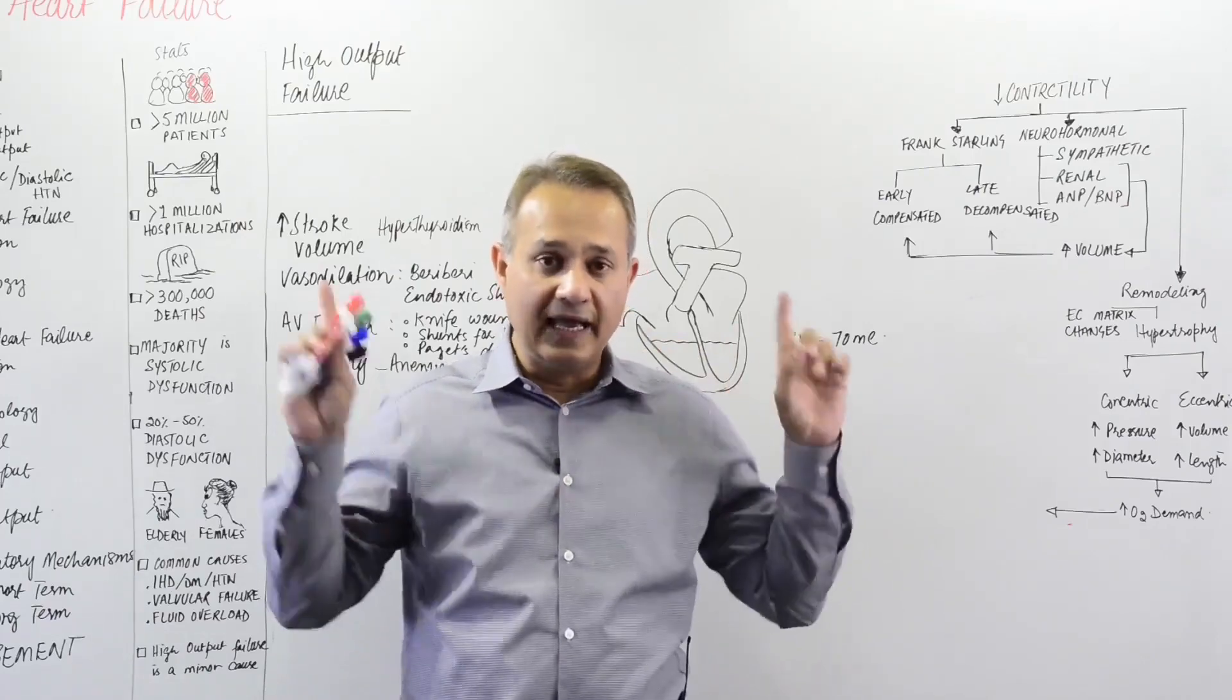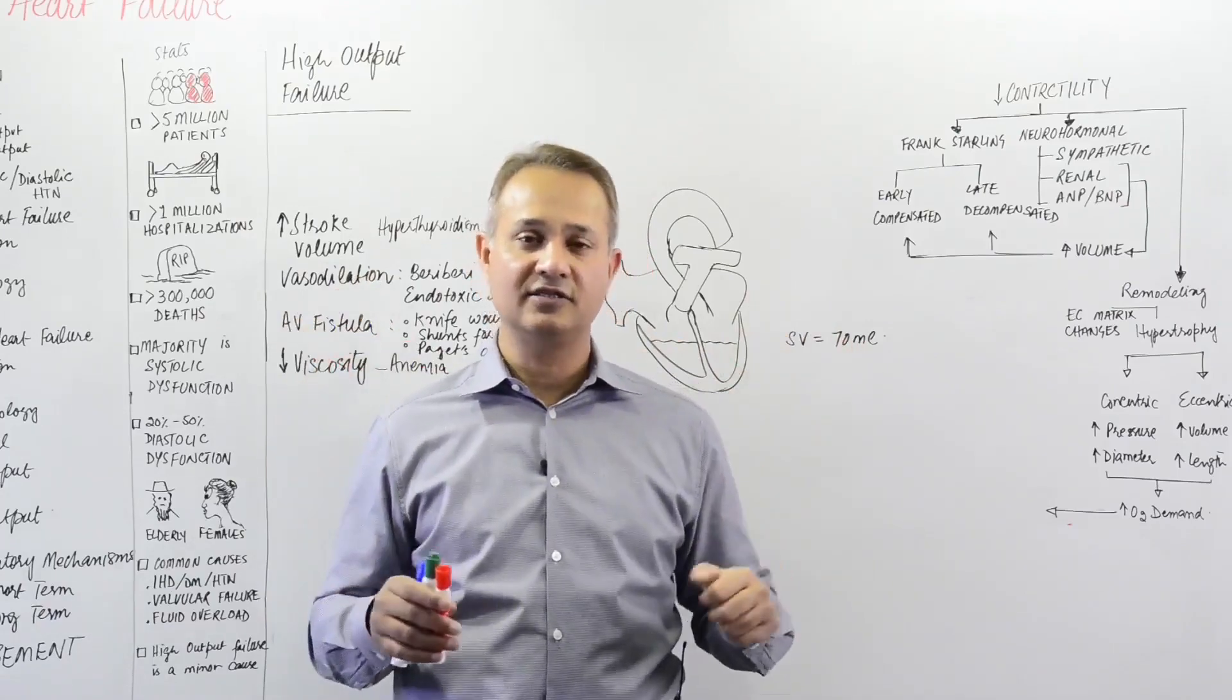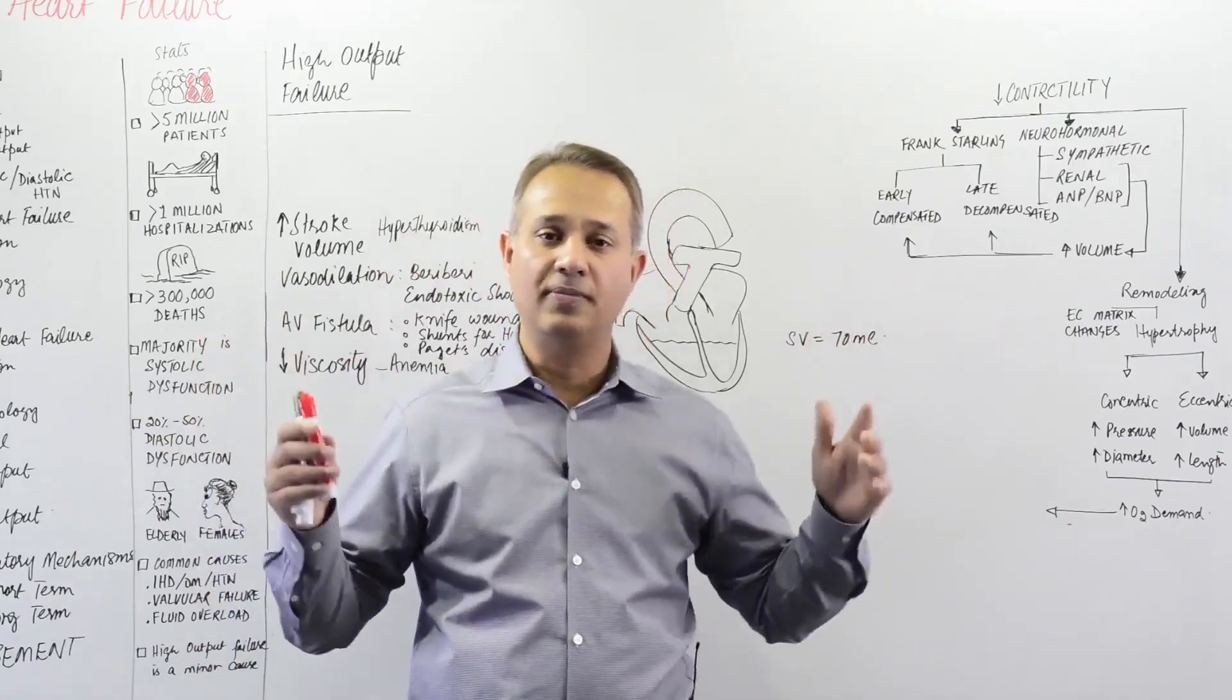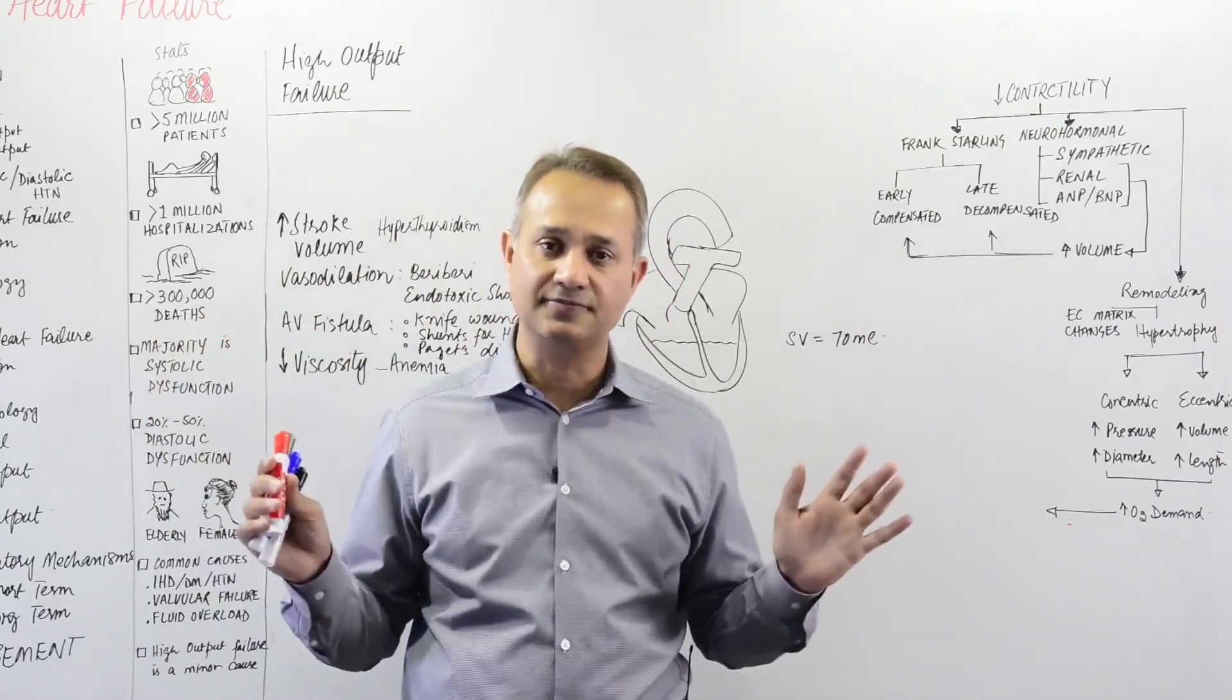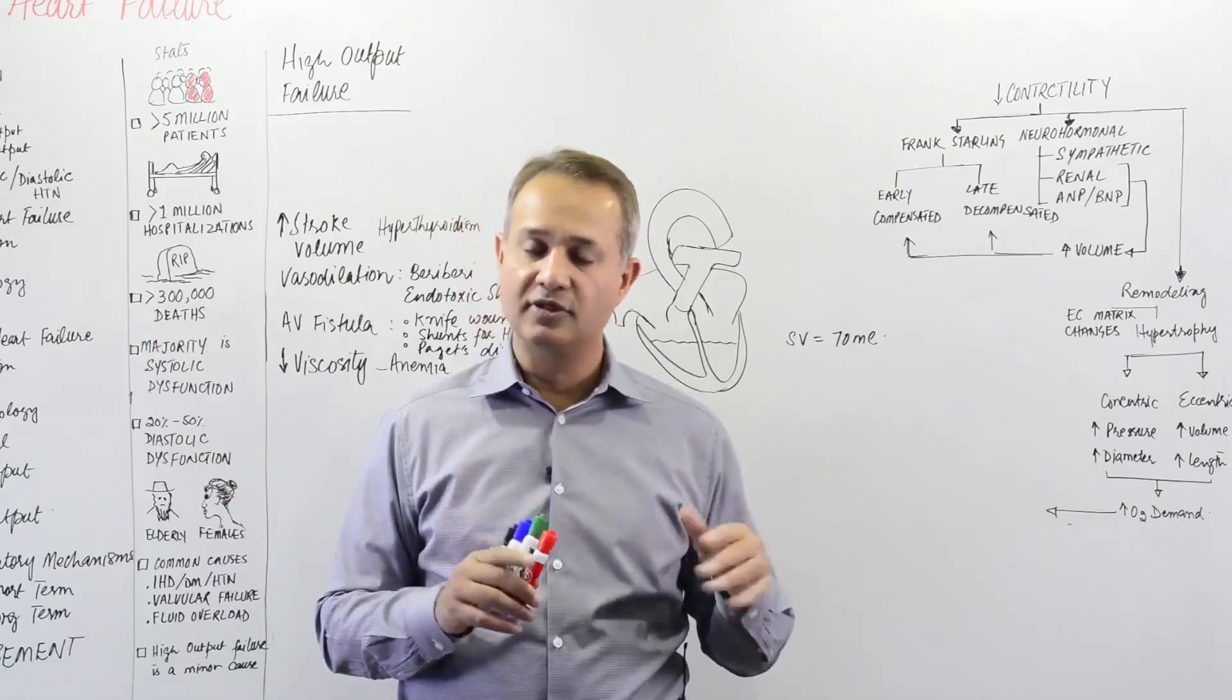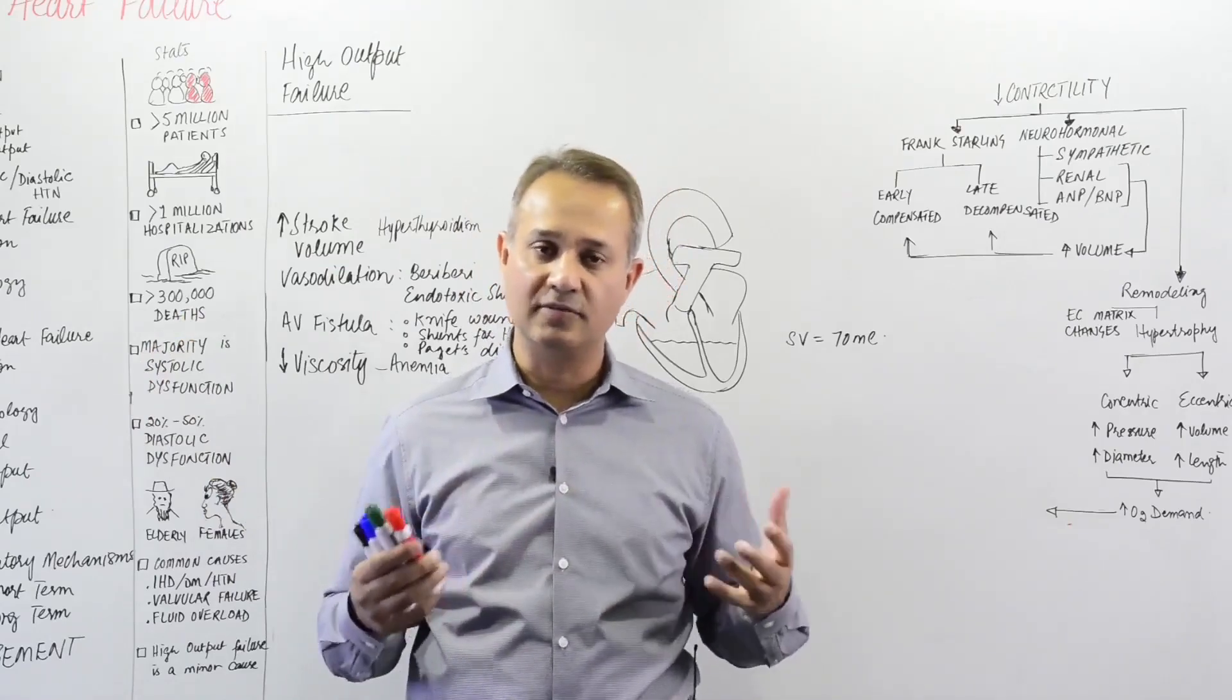Here the tissue demand is abnormal. Instead of asking for five liters for all the body tissues, the body starts asking for 50 liters. The heart starts trying to give more and more, but 10, 15 liters, and then it just exhausts and it dies or gets damaged. Here the heart is normal, demand is more. That is high output. The heart is trying to pump more and more but still the demand is not met, and that is high output cardiac failure.